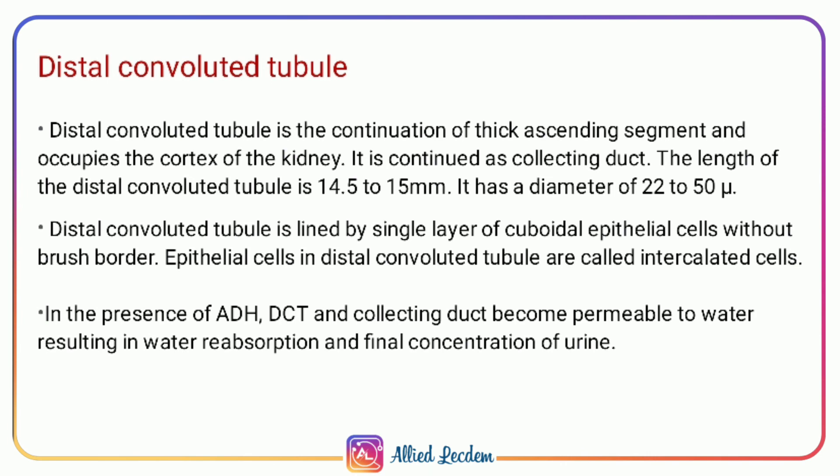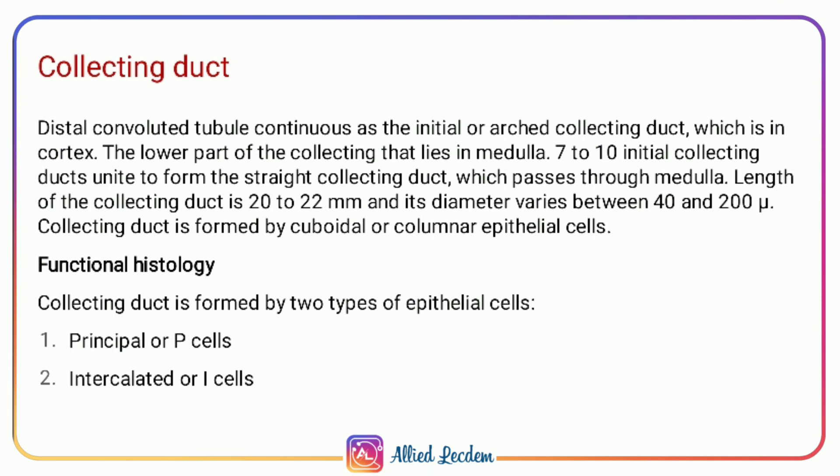The epithelial cells in the distal convoluted tubule are called intercalated cells. The distal convoluted tubule continues as the initial or cortical collecting duct in the cortex. Seven to ten initial collecting ducts unite to form the straight collecting duct, which passes to the medulla. The length is 20 to 22 millimeters and the diameter varies from 40 to 200 micrometers.